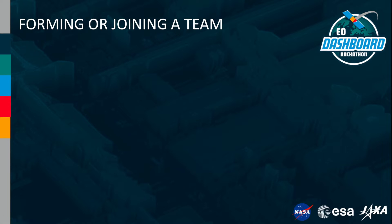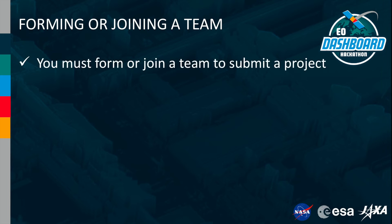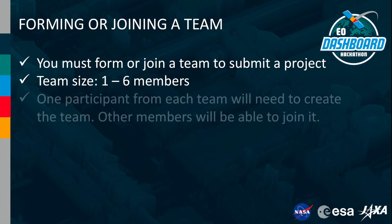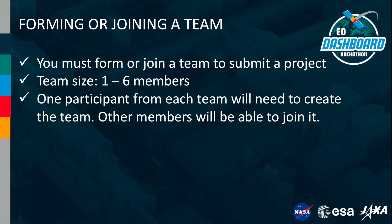Now let's talk about forming or joining a team. You must form or join a team to submit a project. Teams can range from one to six members. As a tip, we find that teams of four to five members with diverse skills work the best. One participant from each team will need to create the team, and other members will be able to join it. Please note that this team will, by default, be tied to the region of the person who creates the team. However, participants from any region can join any team.